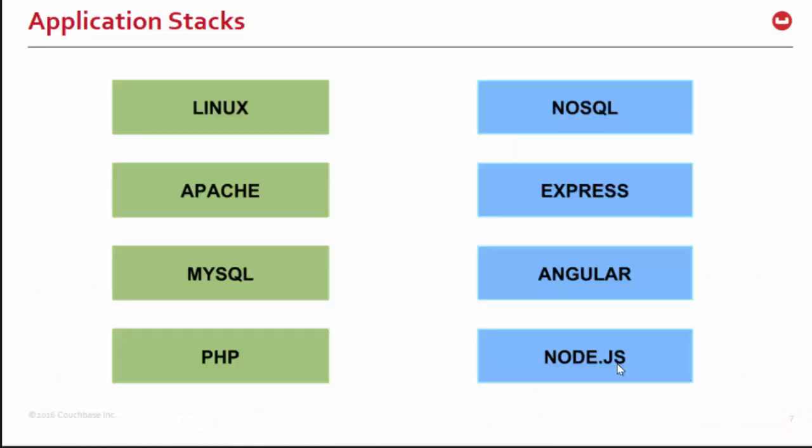The application stacks we see a lot are these catchy ones with neat acronyms. The specific technologies aren't important, but here are some examples. This is your traditional LAMP stack: Linux, a web server, some sort of database like MySQL or PostgreSQL, and PHP, Perl, or Python. You could replace this with Windows and IIS and .NET — it's the same type of stack. The more modern stack we're talking about is on the right: a NoSQL backend, Express on top of the database providing endpoints, Angular for the UI, and Node.js, which is also what Express runs on. That's the MEAN stack.